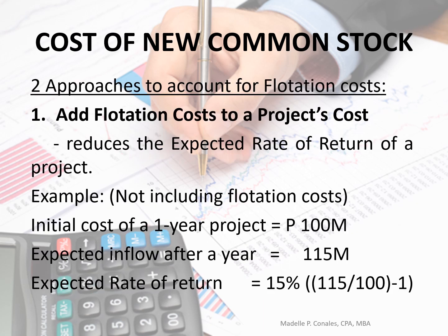There are two approaches in accounting for flotation costs. First, we add flotation costs to the project's cost. In effect, this will reduce our expected rate of return. For example, without flotation costs, we have an initial cost of a one-year project of $100 million. Expected inflow after a year would be $115 million, so the expected rate of return would be $115 divided by $100 minus 1, which equals 15%.